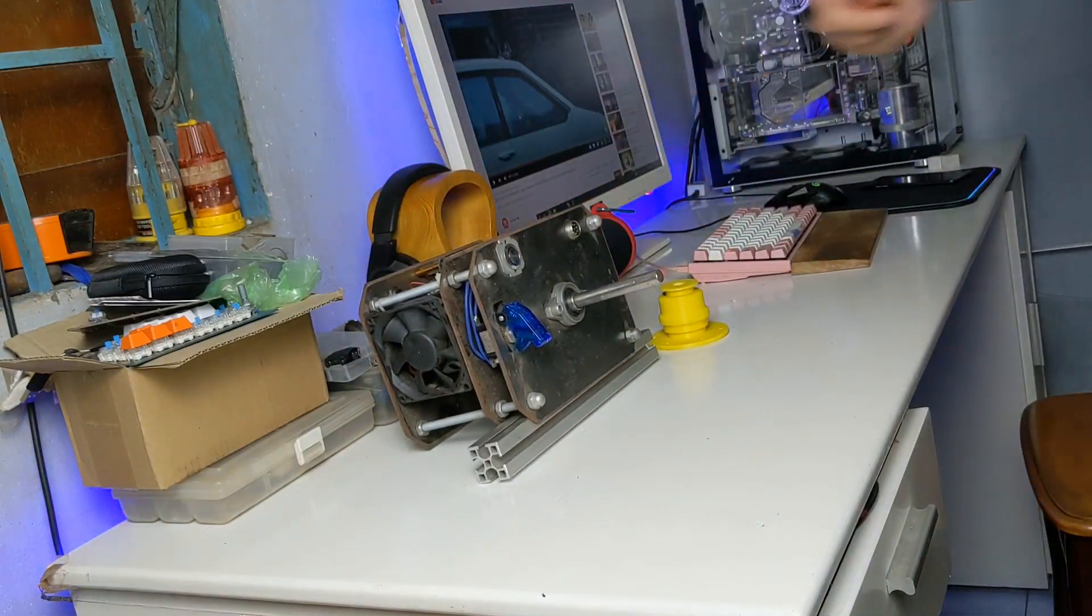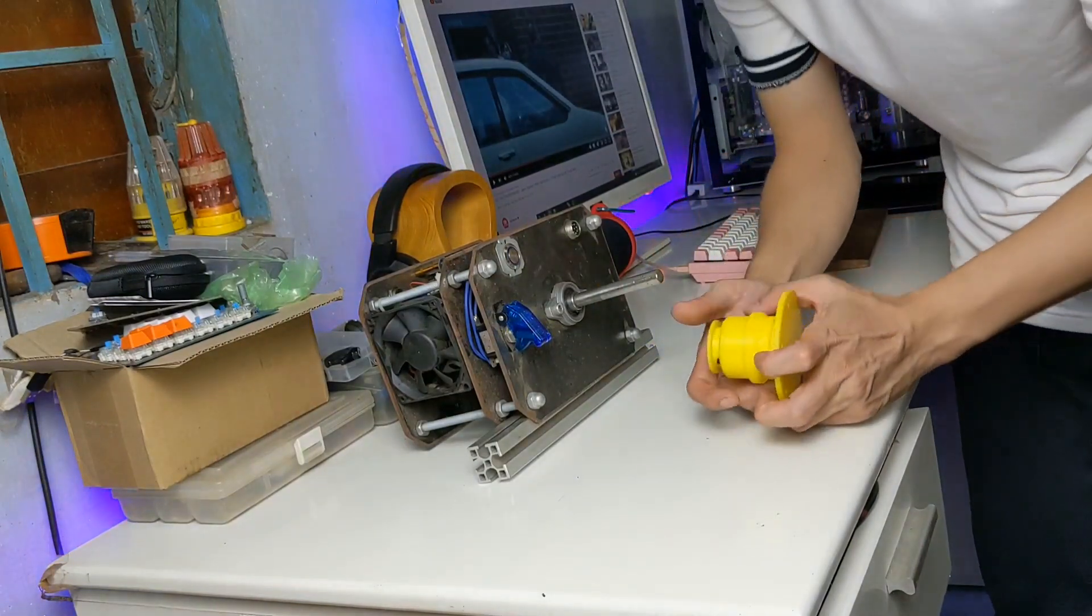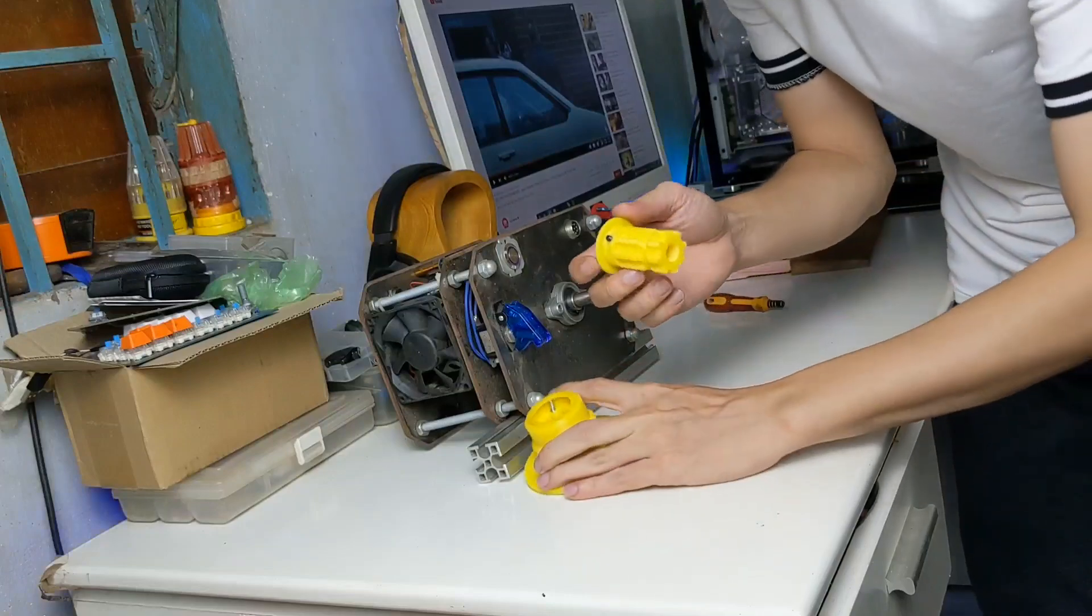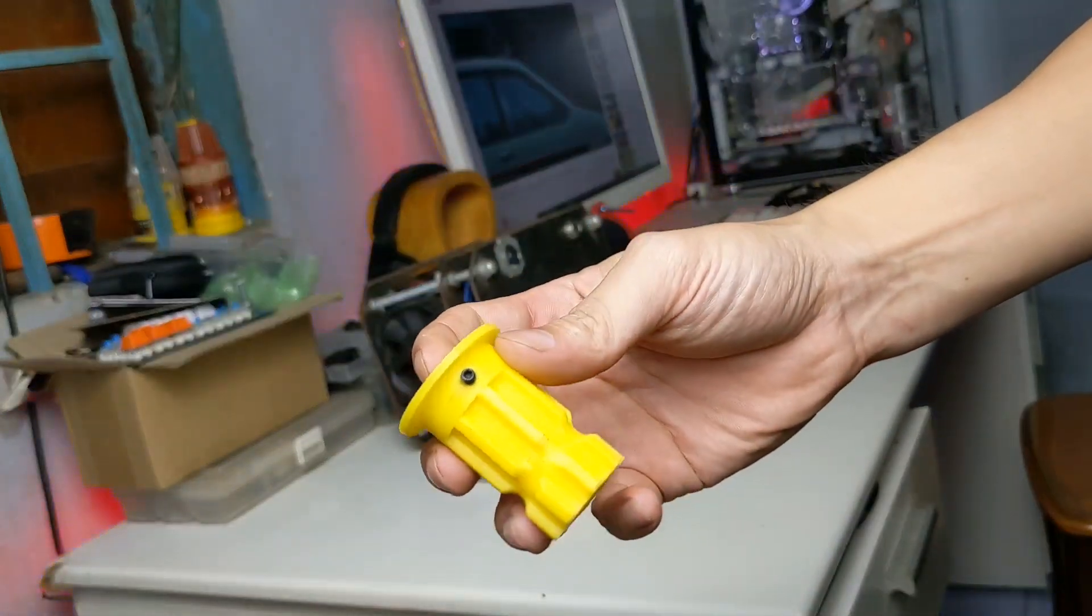This is the current steering wheel. The steering wheel fits the wheel on the motor. Now I will remove the wheel.